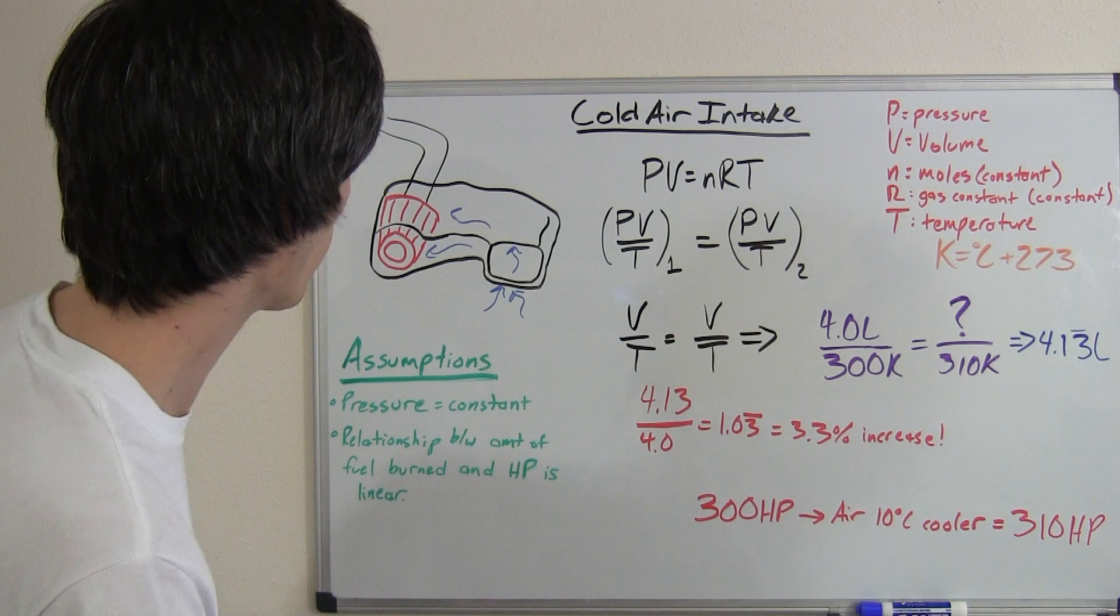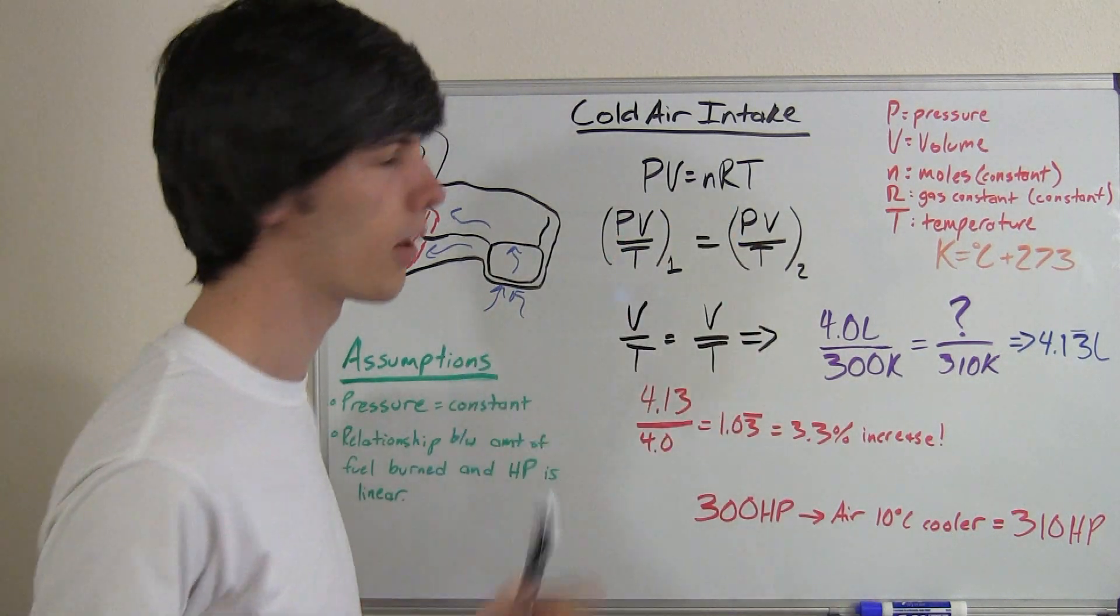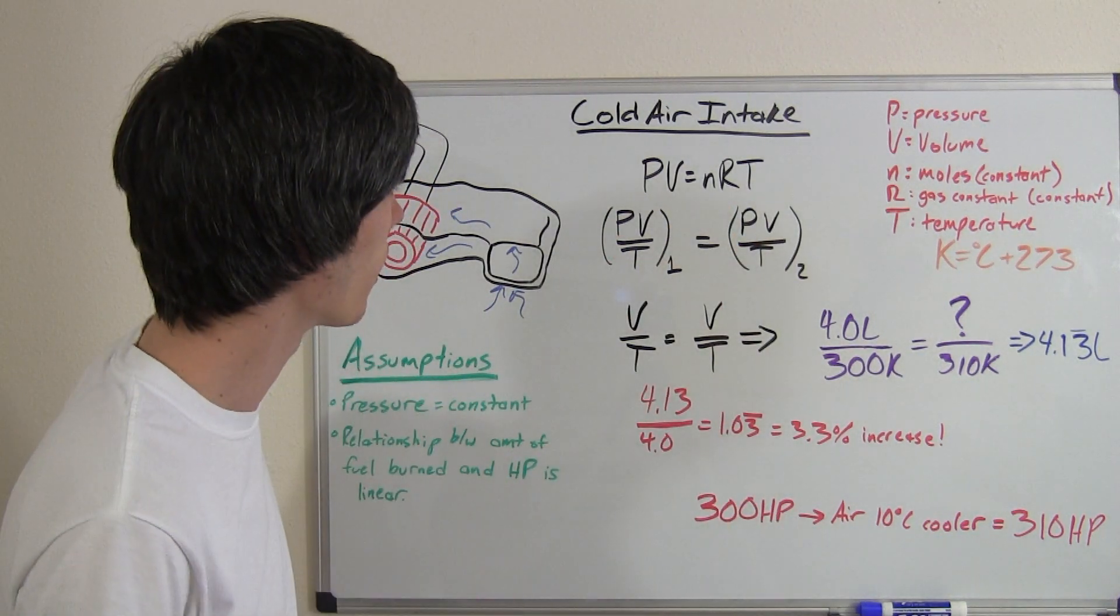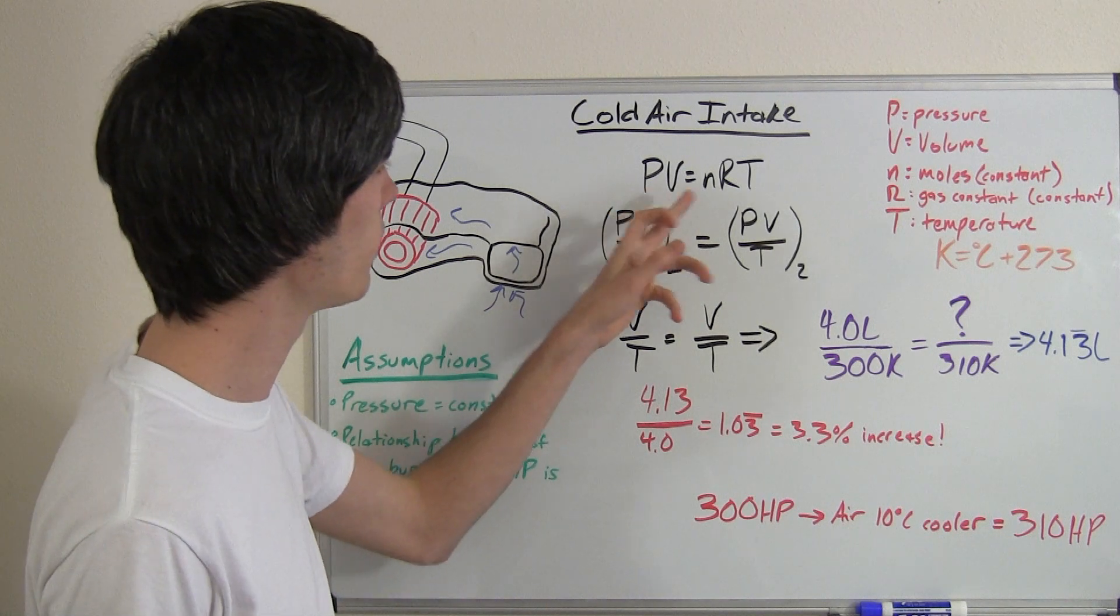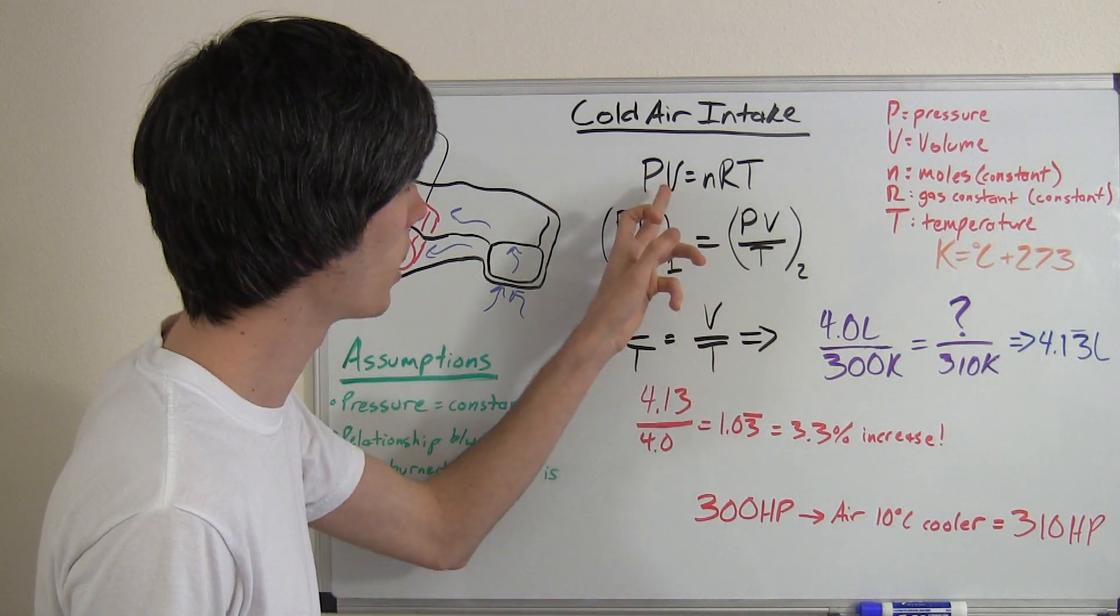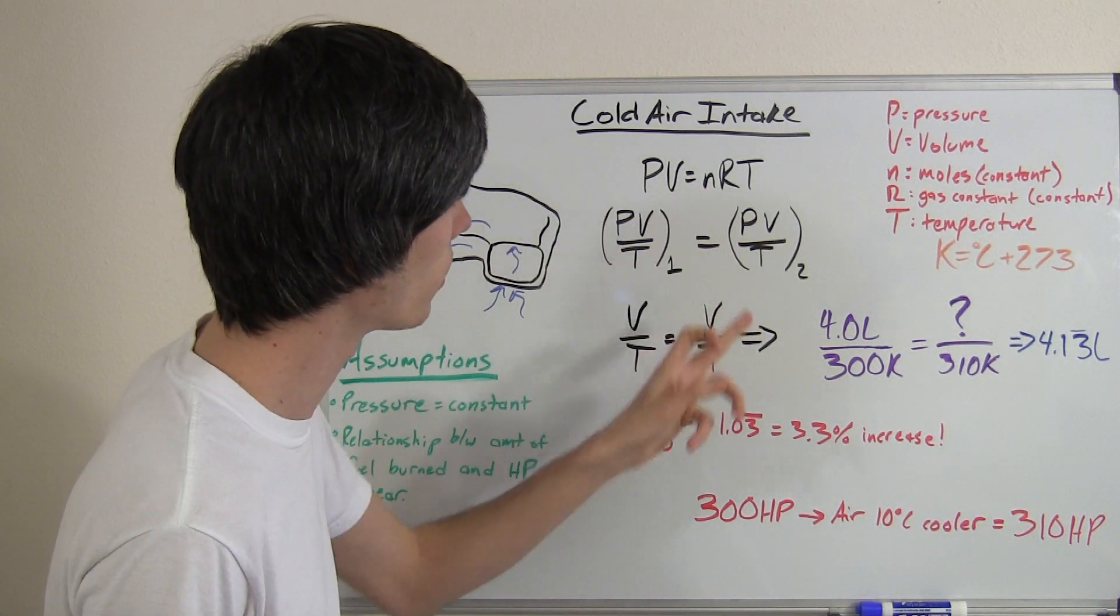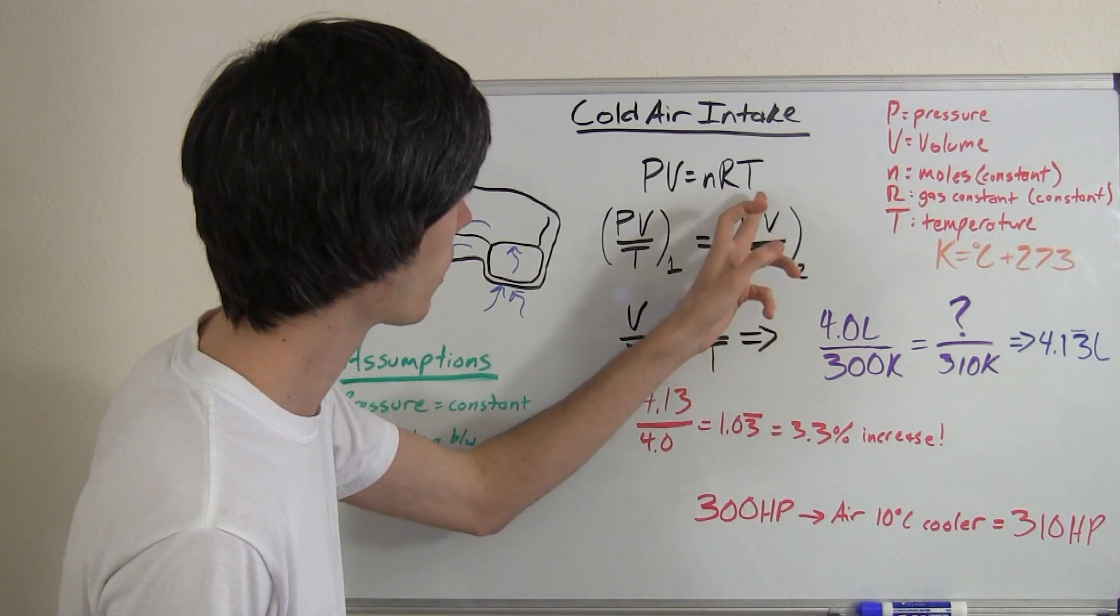So we're going to start off with the ideal gas law and we're going to treat air as an ideal gas. So PV equals NRT. Pressure times volume equals the number of moles times the gas constant times the temperature.